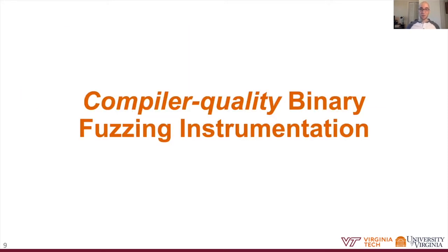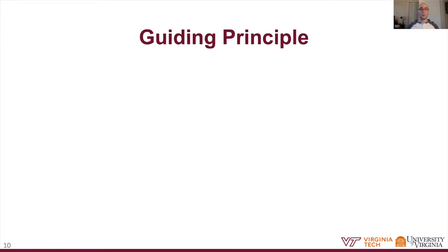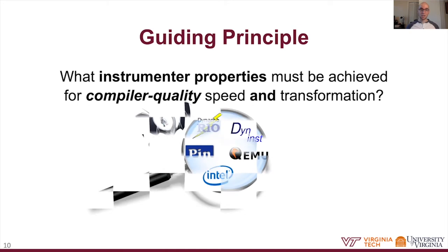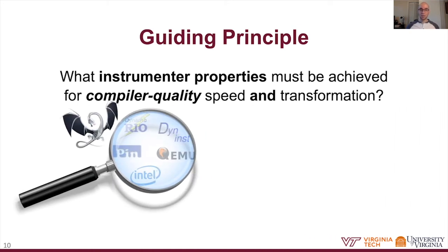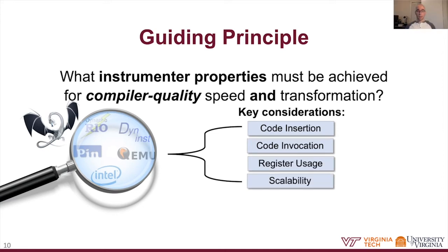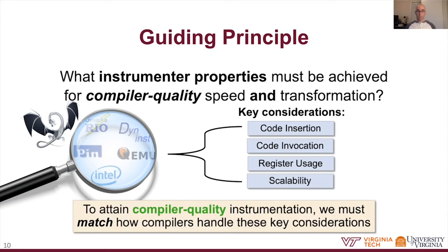This brings us to compiler-quality binary fuzzing instrumentation. As a guiding principle, we identified the properties of instrumentation that must be achieved to attain compiler-level speed and transformation. Looking at available options for binary-only fuzzing instrumentation under the lens of a compiler, we see four big considerations: code insertion, code invocation, register usage, and scalability. To attain compiler-quality instrumentation, we must match how compilers answer each of these four considerations.